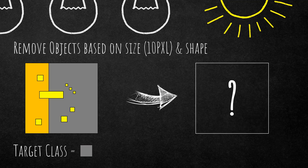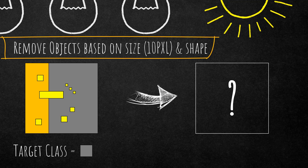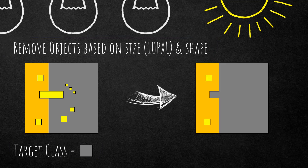One final example: we want to remove objects based on size — 10 pixels — with shape merging, and the target class is the gray class. The result is that the two yellow image objects on the left cannot be removed, because the target class is only the gray class and not the orange class. Now let's have a look at two real use cases.